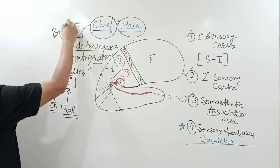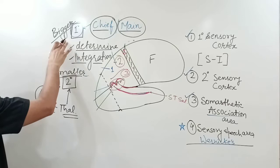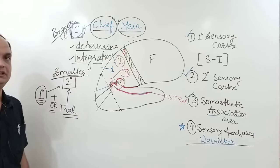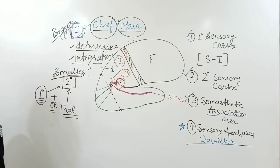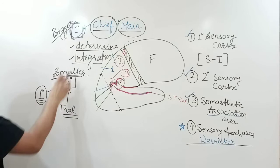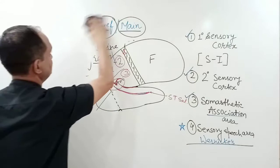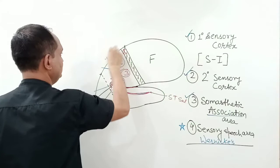Primary areas are bigger in size while secondary areas are smaller. Another key difference is that a lesion in the primary areas causes a very significant sensory loss, whereas a lesion in the secondary areas may have less impact. The primary areas serve as the chief relay station for the principal sensory input fibers reaching the sensory cortex.